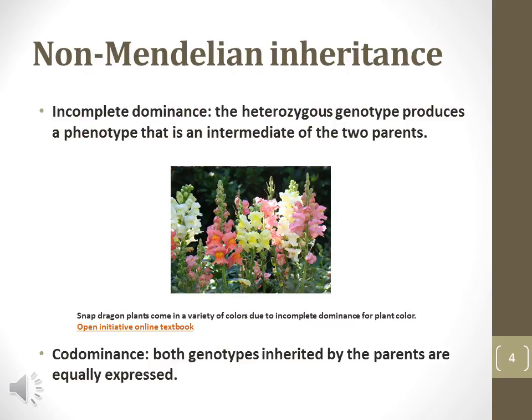There is now knowledge that explains inheritance patterns that Mendelian genetics did not explain. Incomplete dominance refers to expression of both alleles of a genotype, such as a plant with red flowers being crossed with a plant with white flowers and producing offspring with pink flowers. Co-dominance refers to equal expression of both alleles, such as human AB blood type, which expresses both blood type A and blood type B.